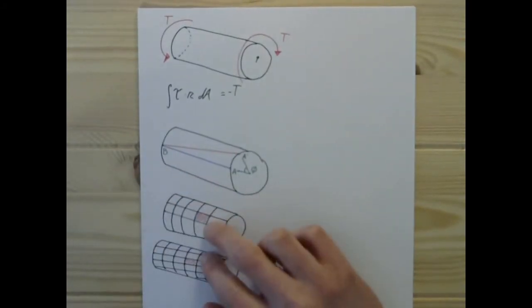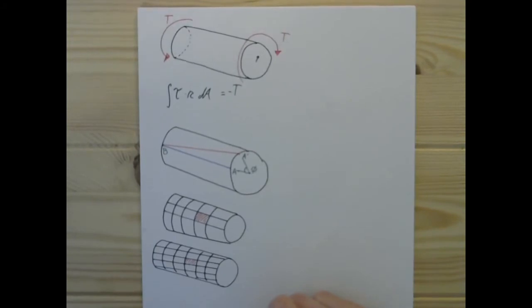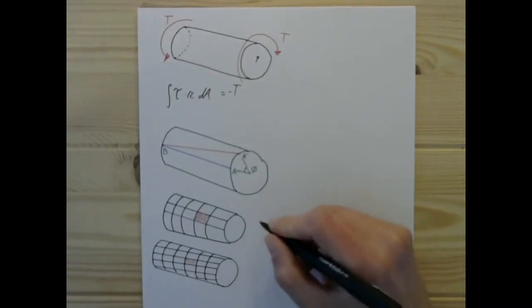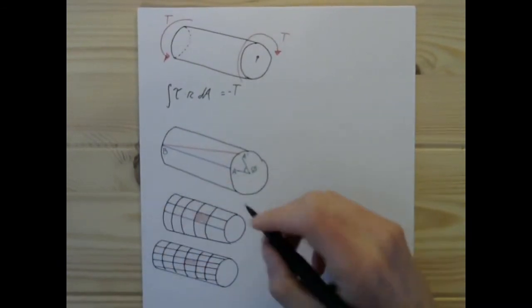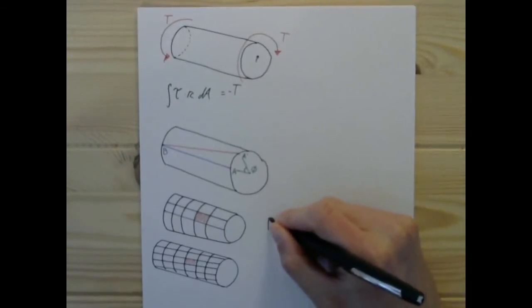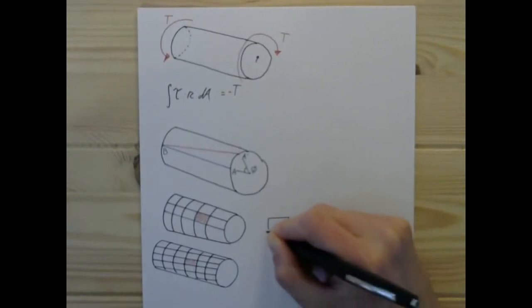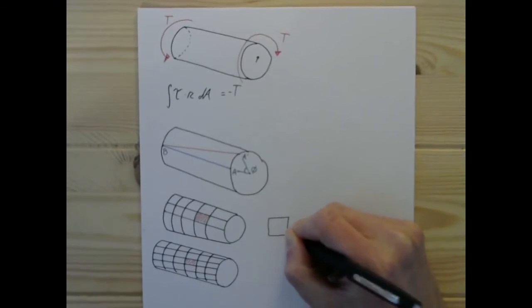Look at the change in element shape from this one to this one. My perspective is off after a couple tries, and I've given up, but we've gone from a square—if we rotated this to look at it head-on, we would have had a square here...